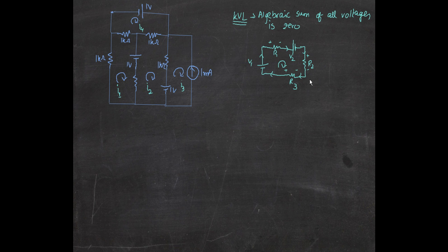Now there is this circuit here. Let's look at how to apply Kirchhoff's Voltage Law here. Since it's the sum of all the voltages, you have to always sum up all the voltages and then equate it to zero.